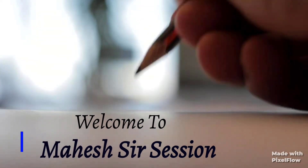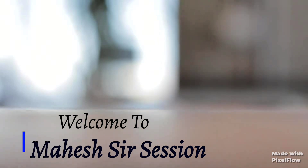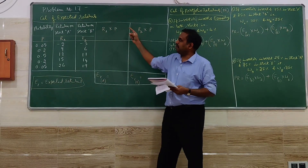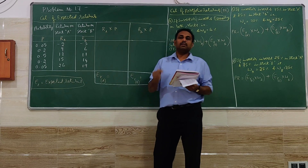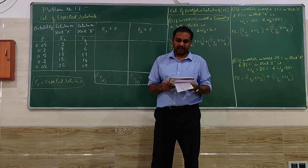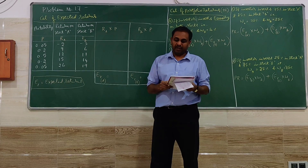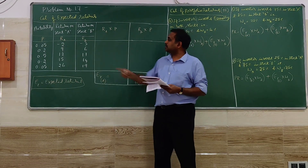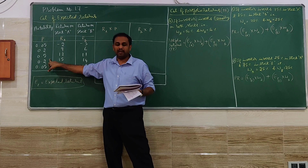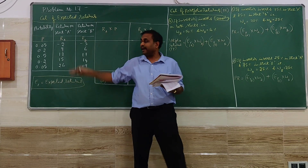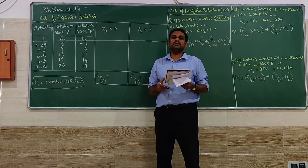Welcome to point number 17. The problem goes like this: the rate of return and probability of two different stocks A and B have been given. The values are provided, and there are three questions to solve.